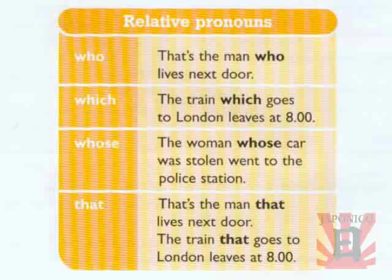Relative pronouns. Who? That's the man who lives next door. Which? The train which goes to London leaves at 8. Whose? The woman whose car was stolen went to the police station. That? That's the man that lives next door. The train that goes to London leaves at 8.